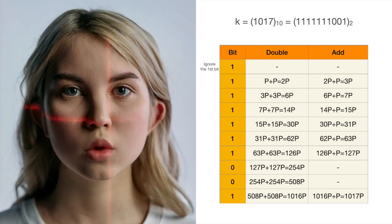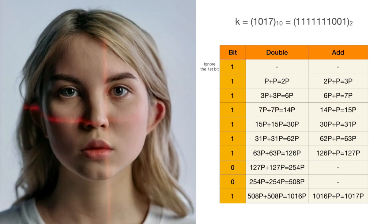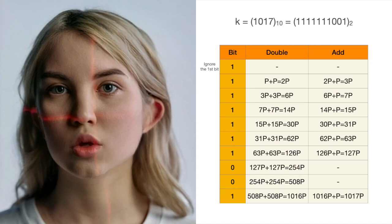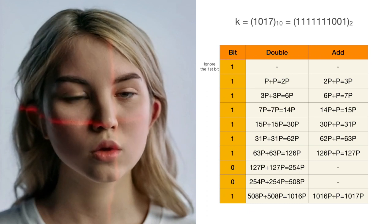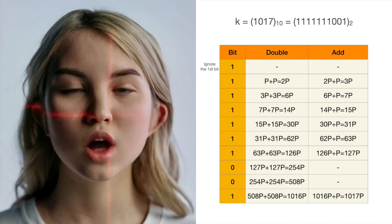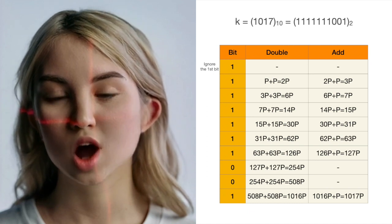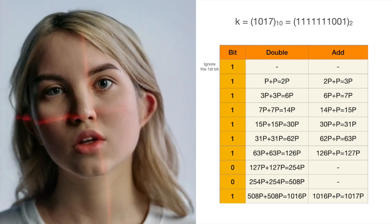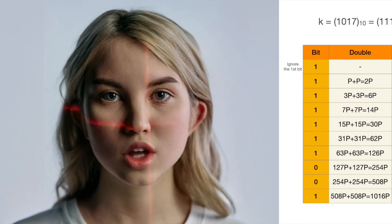Then, independent of its bit value, we always double the current result, q, on the curve by adding it to itself. If the current bit is 1, then we also add the point p to the current result, q, on the curve. By repeating this process for all the bits in our secret number, we obtain the final result, which is the result of the scalar multiplication.